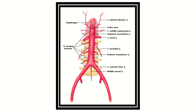Here we can see the different structures — the lower end of the diaphragm, the diaphragm itself, and the different branches: anterior branch, lateral branch, terminal branch, and posterior branch. A vascular clamp placed just immediately below the diaphragm means we need to find an artery in this area. Here we can see the inferior phrenic artery, which is the most superior branch.